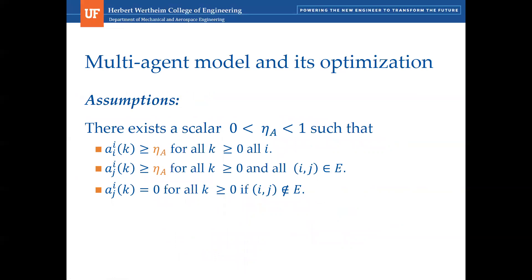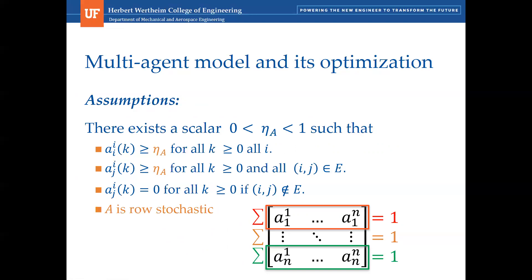There are assumptions that pertain to the weight of the A matrix. These assumptions are largely used. However, the major difference is that eta A here is known for our algorithm. And also, A is row stochastic.